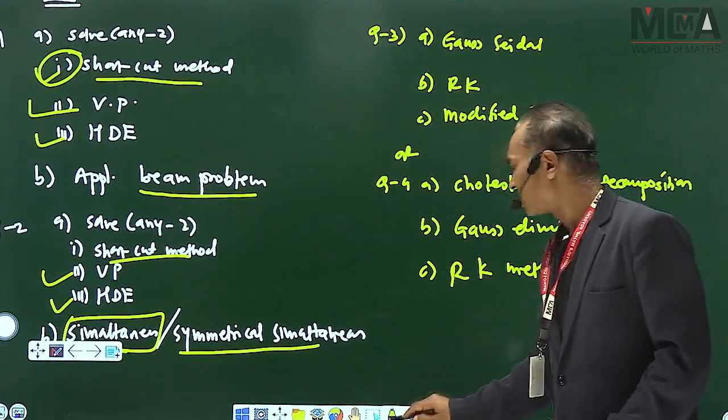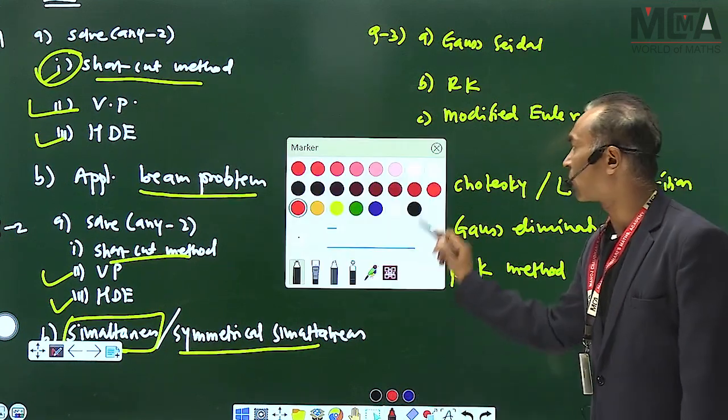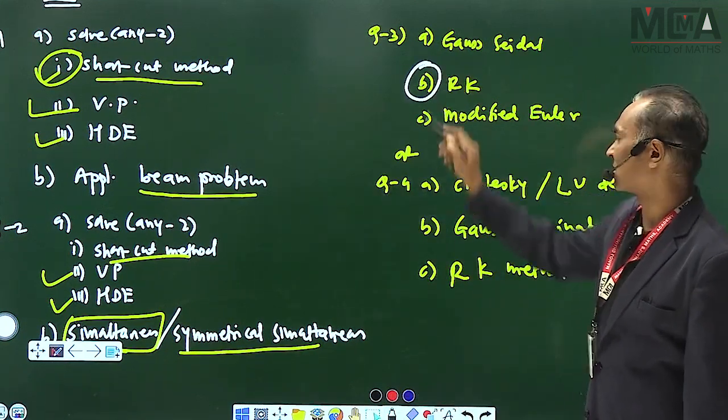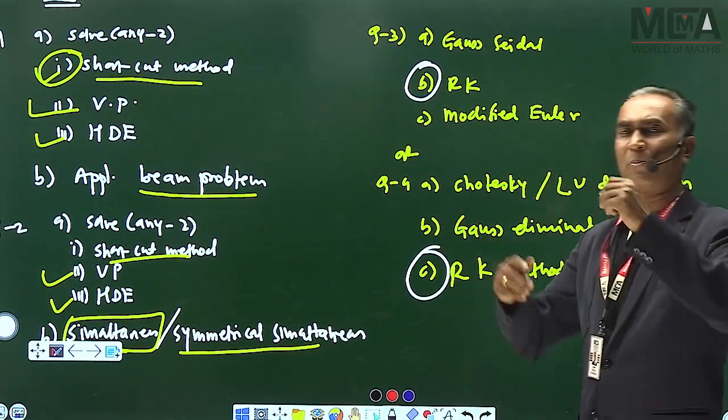Gauss Seidel, Runge-Kutta, Modified Euler. So I have to give you a suggestion. Runge-Kutta, I have to go ahead. As much as possible, you will give them all the time.